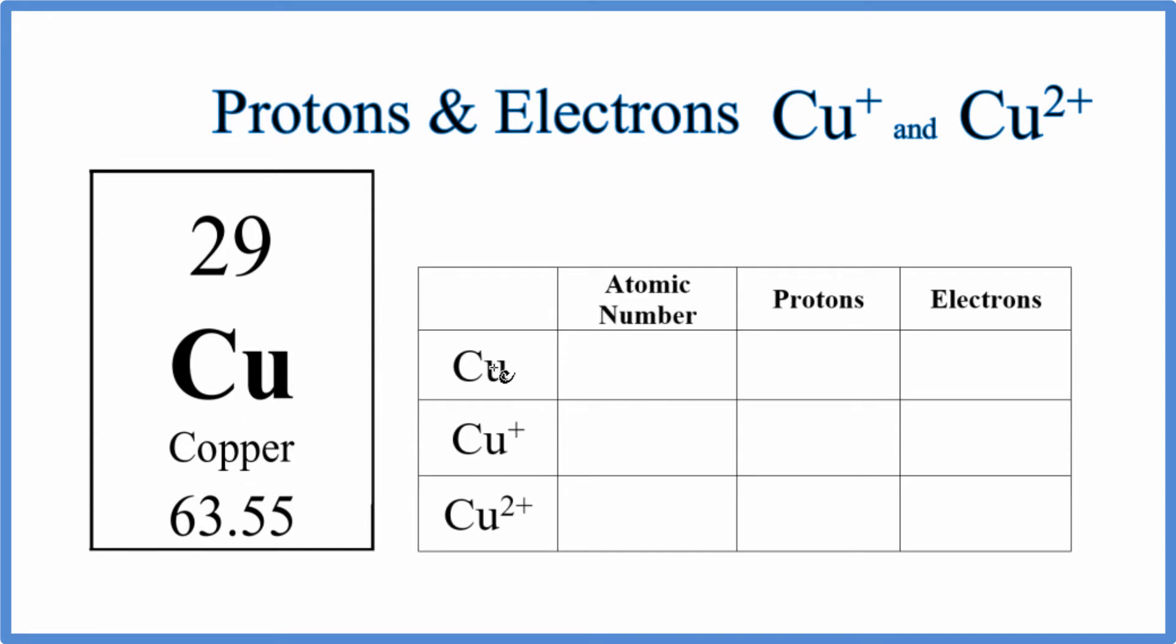We know that we have neutral copper here, and we know that the atomic number on the periodic table equals the number of protons. So we have an atomic number of 29 for copper, and that means it has 29 protons.